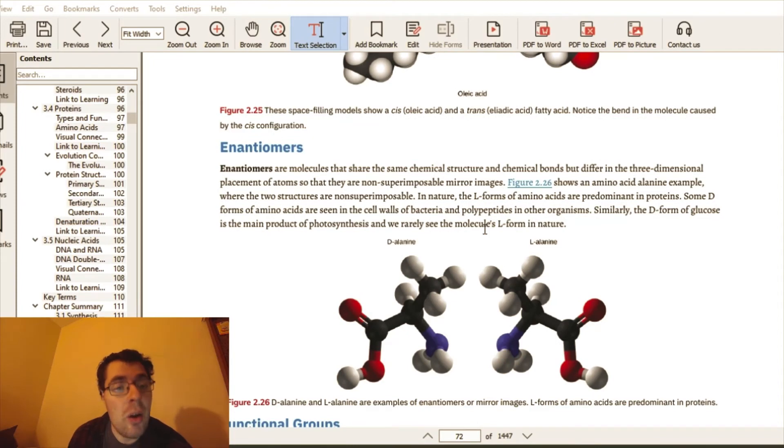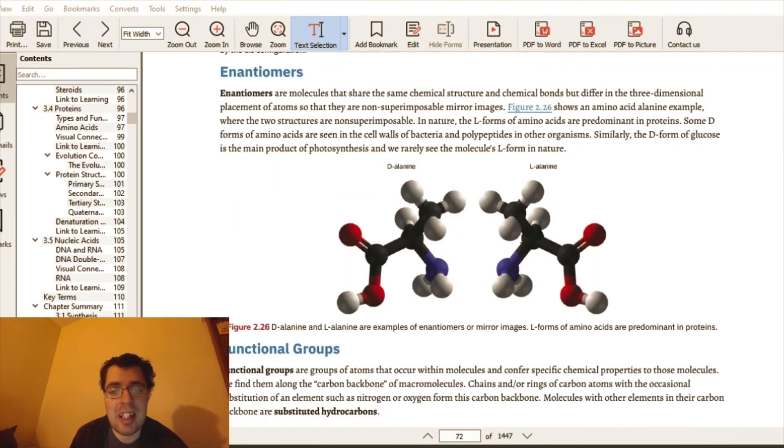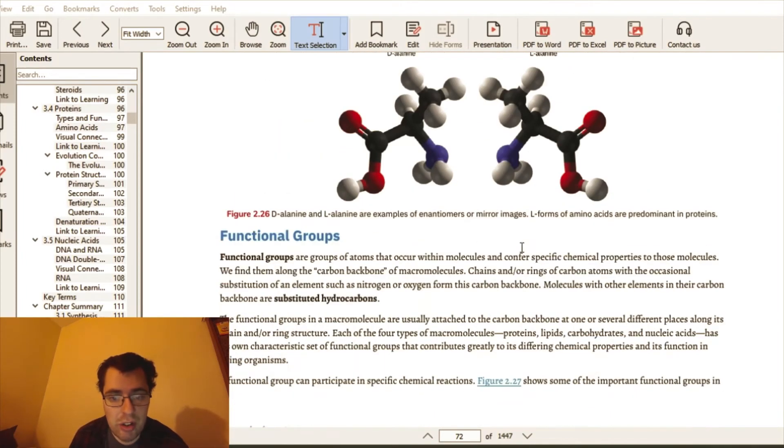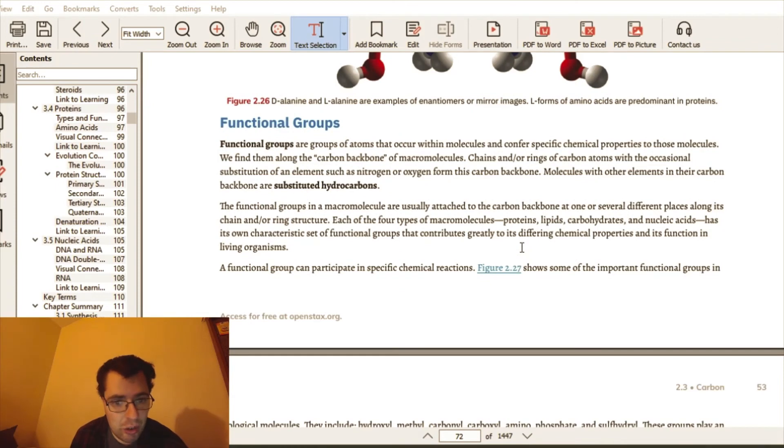Enantiomers are molecules that share the same chemical structure and chemical bonds but differ in the three-dimensional placement of the atoms so that they are non-superimposable mirror images. Basically, when the atoms are the same but they just mirror each other.